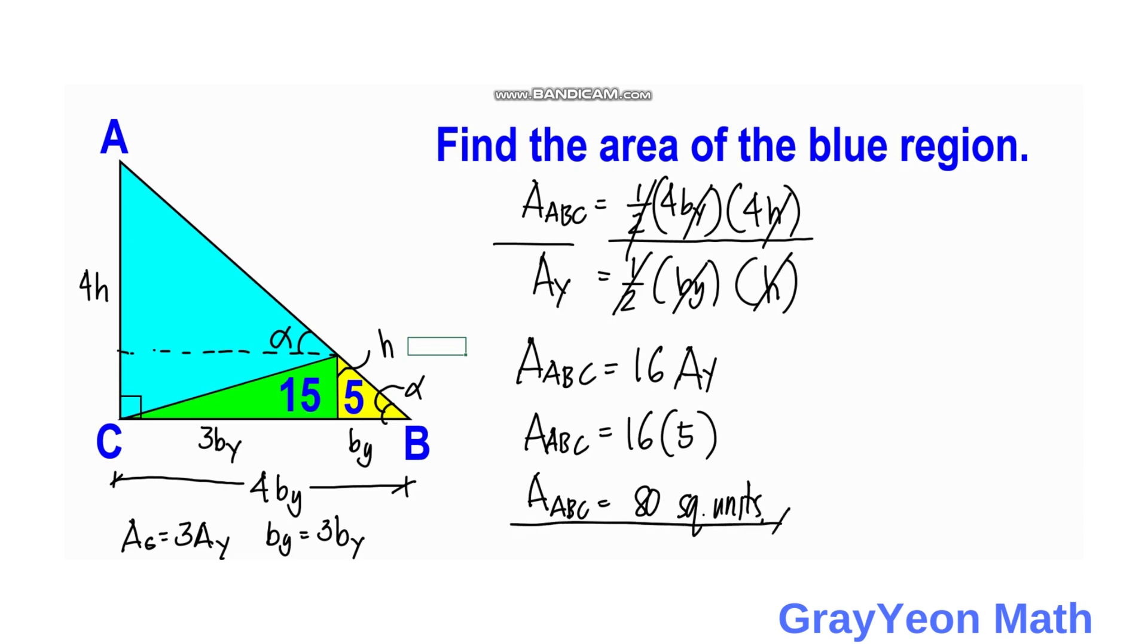And next is we are going to find the area of this blue region. So area of the blue is equal to area total which is 80 minus the area of the green which is 15 minus the area of the yellow which is 5. So we have 80 minus 20, and that would be area of the blue is equal to 60 square units. And that is our answer.